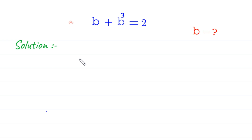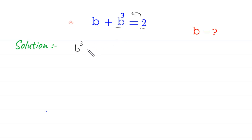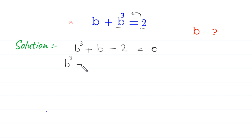Hello everyone, welcome to how to solve this very nice cubic equation: b plus b cubed is equal to 2. Our job is to find all possible values of b. Let's start by moving this 2 to the left hand side, so b cubed plus b minus 2 is equal to 0.